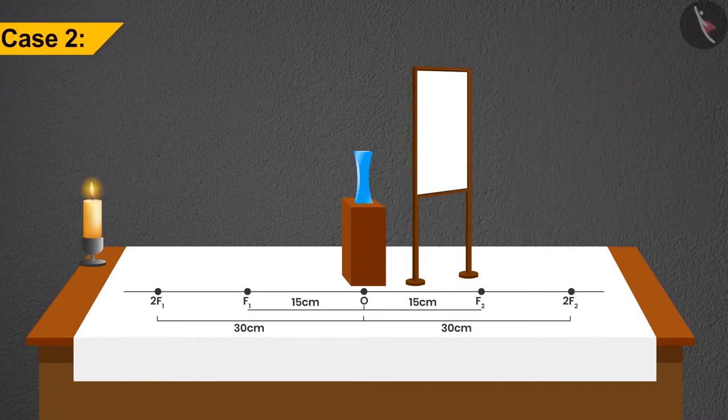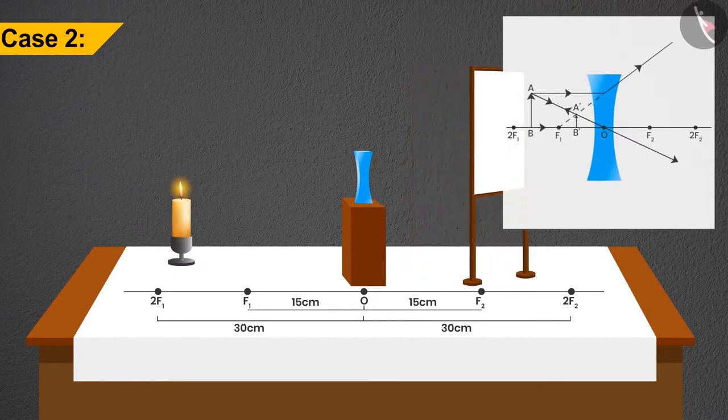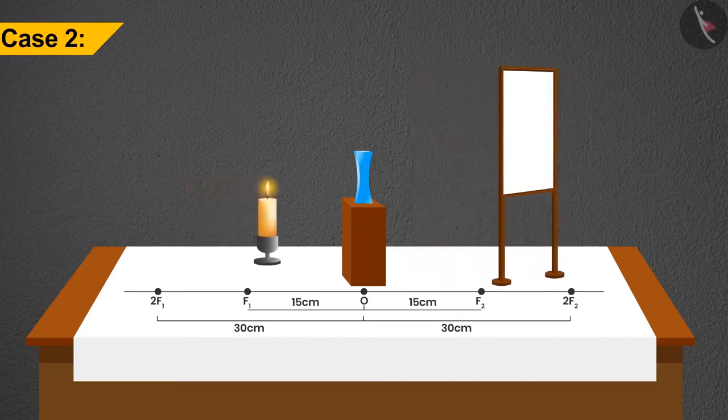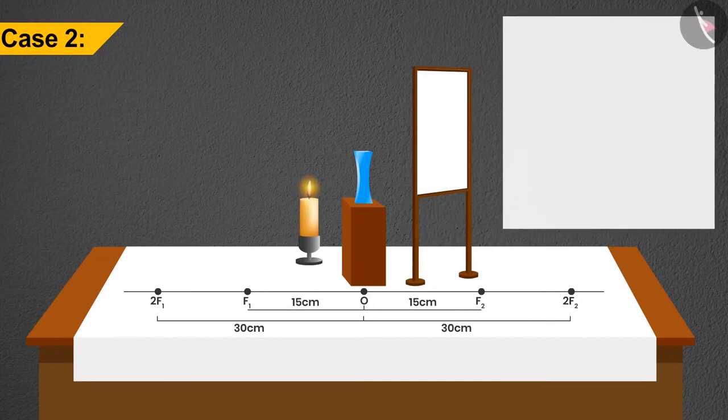In the second case, if we bring the candle a little closer from infinity, what will happen? We will not see any image on the screen. Then slowly bring the candle closer to O. Even then nothing is visible on the screen. So it would be correct to conclude that no matter what the case, concave lenses always form virtual images.